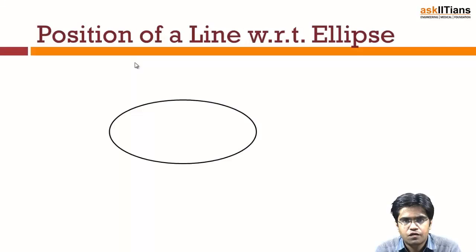Welcome back. In this third part, we are going to study the most important point in this chapter: the equation of tangents. We are also going to study how a straight line can interact with the curve — that is, the ellipse — and what the different conditions are. We are also going to derive the condition of tangents in this part. So let's start with the position of a line with respect to an ellipse.